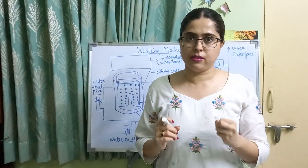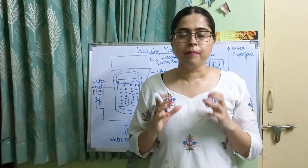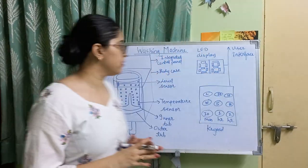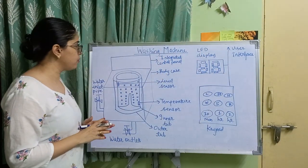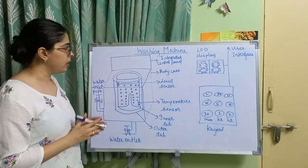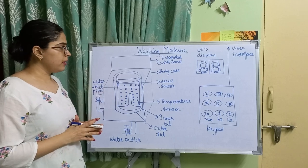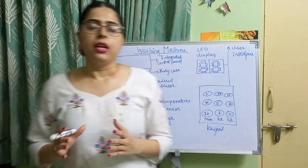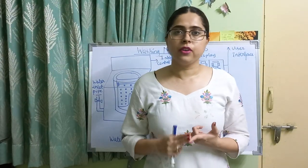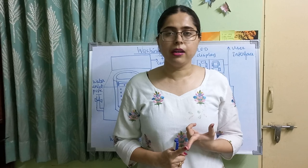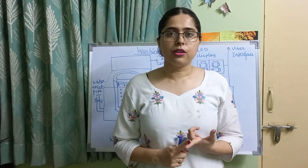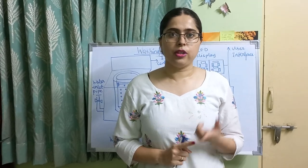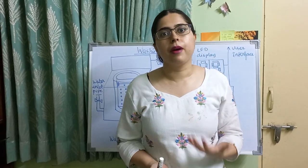Today we are going to discuss the washing machine as an application-specific example of an embedded system. This is the diagram of the washing machine. You can see it consists of three parts: first is the sensor part, second is the control unit, and third is the actuator part.